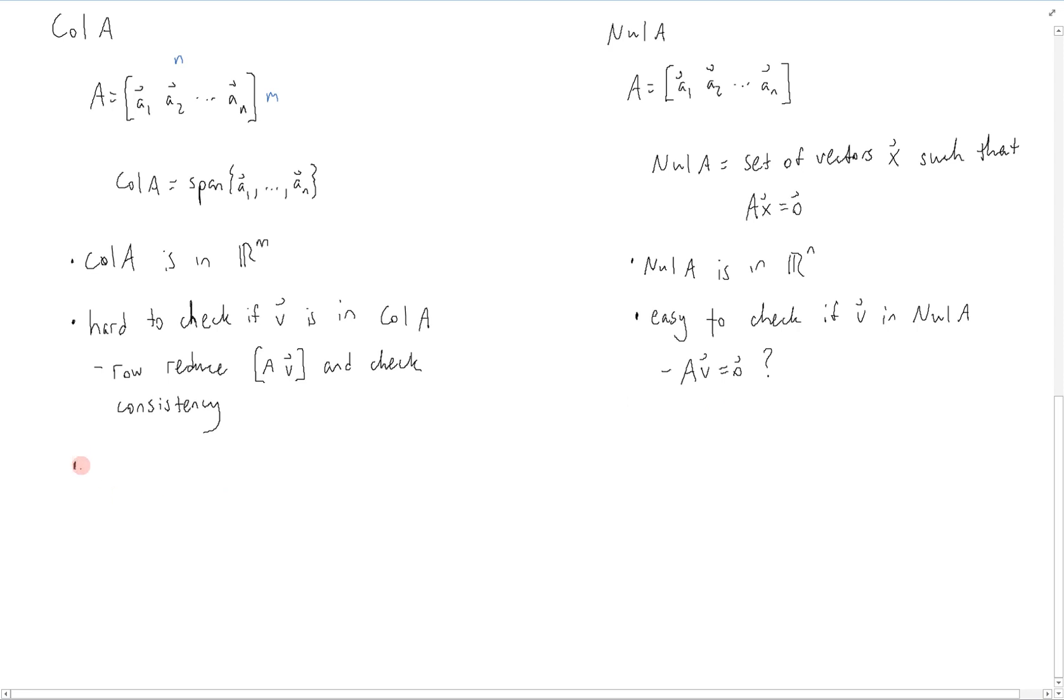For the column space, it is easy to generate vectors in column space of A because basically any linear combination of the columns is going to be in the column space of A because that's what is defined as the span of the columns.